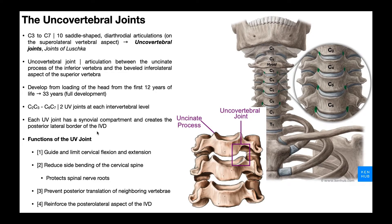The UV joint has four major functions, plus a fifth we'll cover in the next video. Function one: the UV joint guides and limits cervical flexion and extension. You want mobility in the cervical spine, but too much is bad — particularly in flexion, going too far puts tension on the spinal cord and your entire nervous system, so these movements need to be limited.